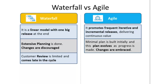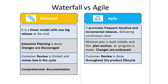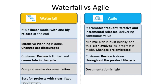In Waterfall, customer interaction and review is limited and comes late in the product lifecycle, whereas in Agile, customer review is done throughout the product lifecycle. In Waterfall, comprehensive documentation is done to finalize the scope and requirements, whereas in Agile, documentation is light as it is based on experimentation and empiricism. Waterfall is best for projects with well-defined requirements where the end state is known, whereas Agile is best for projects with evolving requirements.